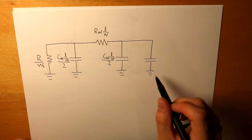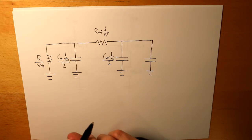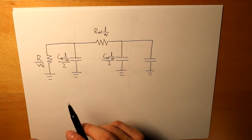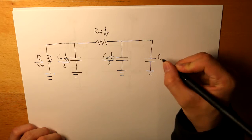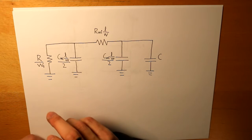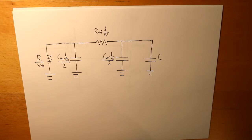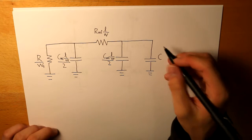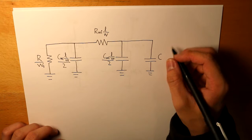Finally, for this capacitance we have the capacitance that is generated from the inverter, multiplied by the width of the inverter.